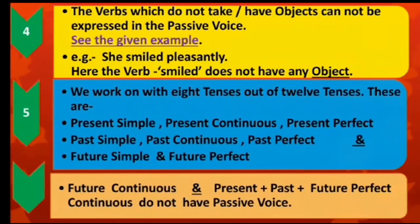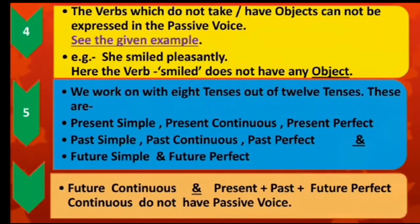Point 5: We work on with 8 tenses out of 12 tenses. These are present simple, present continuous, present perfect, past simple, past continuous, past perfect, future simple, and future perfect. The tenses we do not work on with are future continuous and present, past, and future perfect continuous.